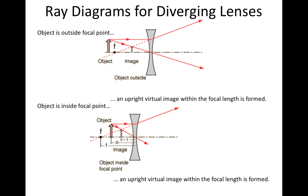Now, when your object is within that focal point, here you get actually the exact same thing. It looks exactly the same. And so here you can see an upright virtual image within that focal length is formed. So now you've broken it into three categories that should help when you're working through these lens problems.